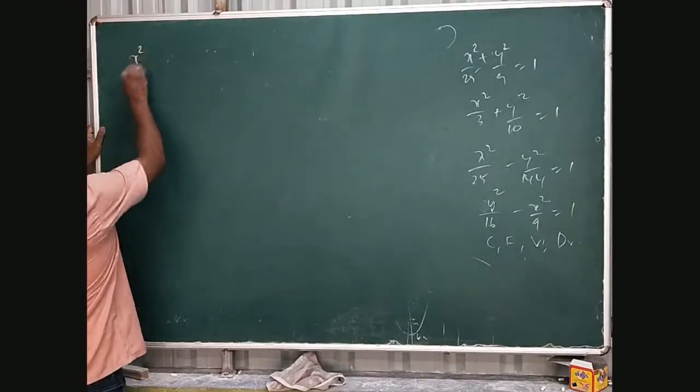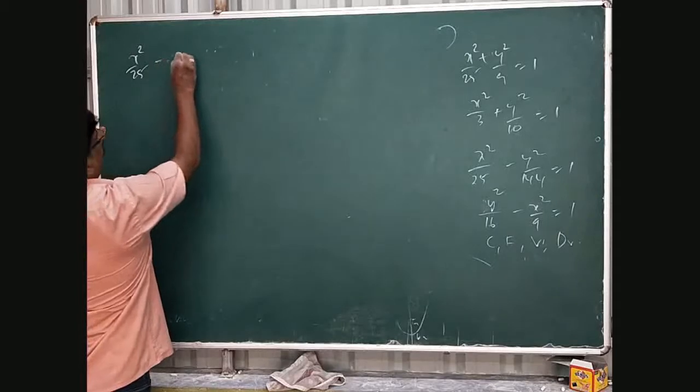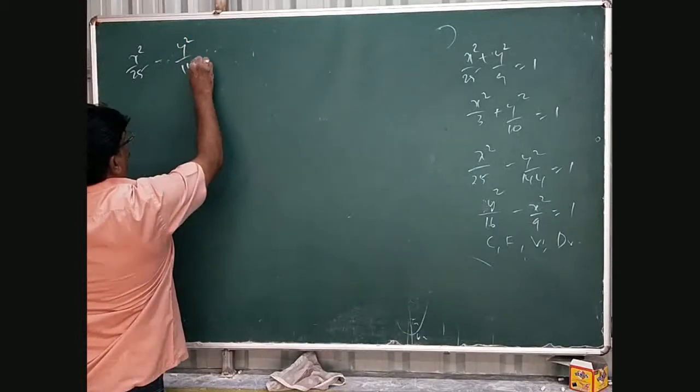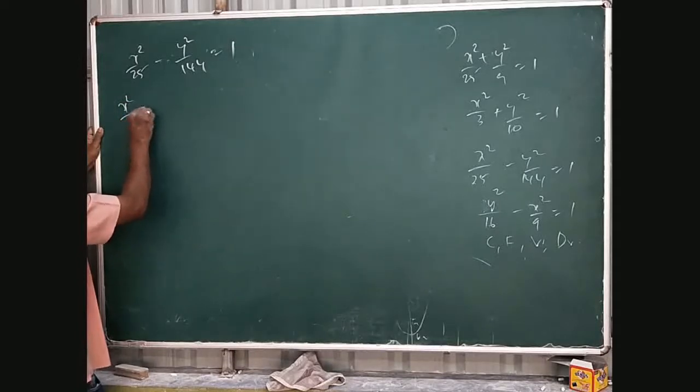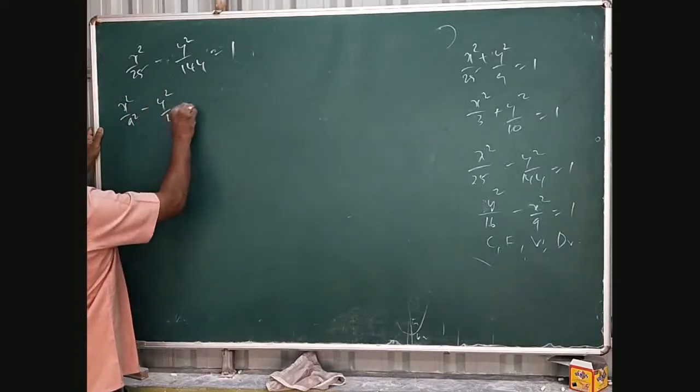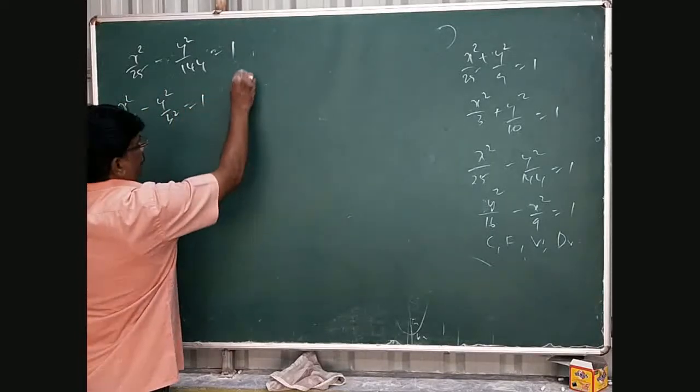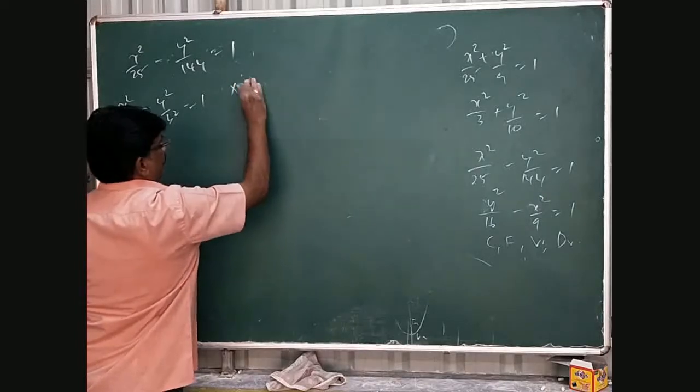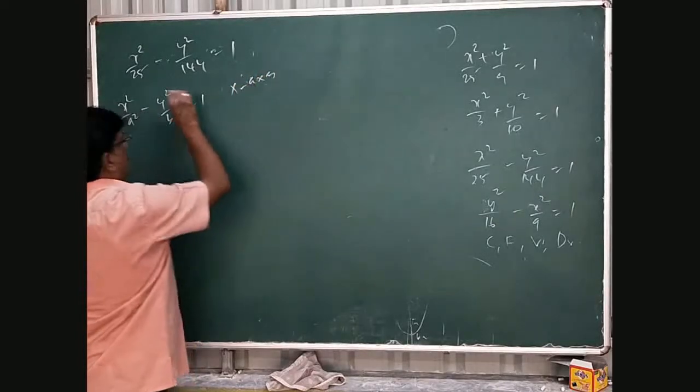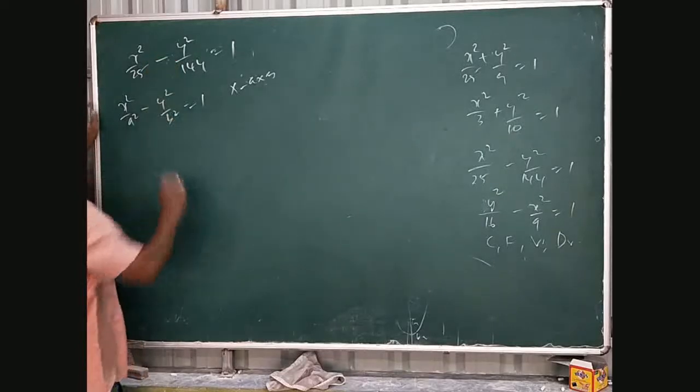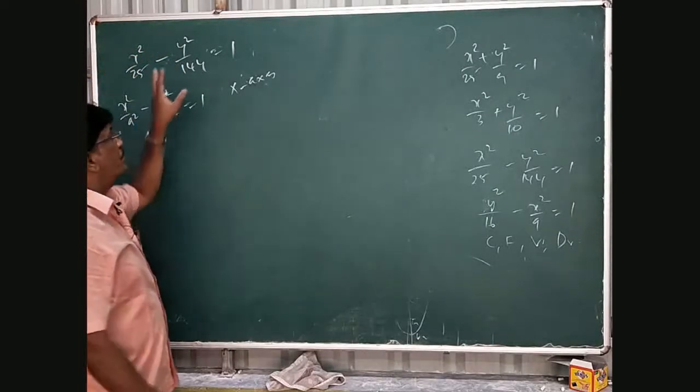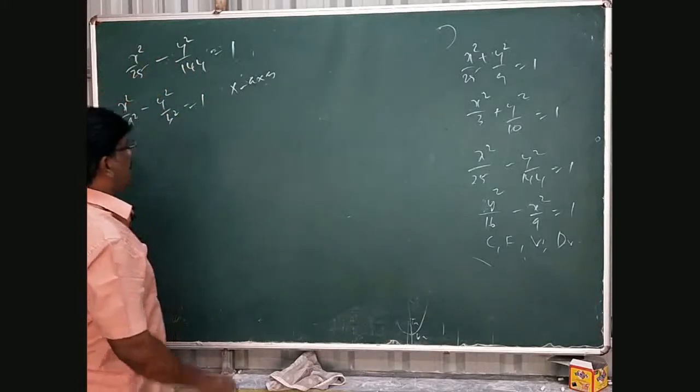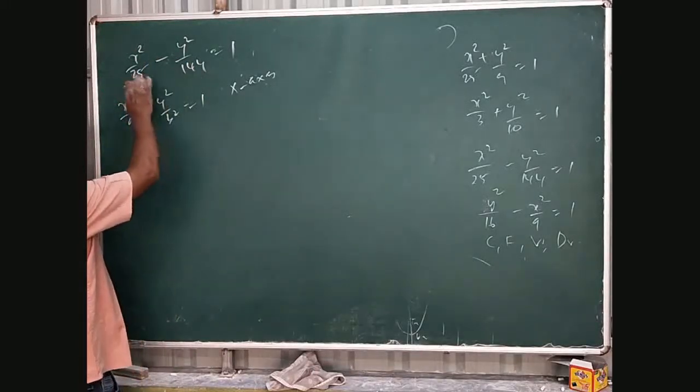Given x squared by 25 minus y squared by 144 equal to 1. So, general hyperbola formula x squared by a squared minus y squared by b squared equal to 1. This is parallel to x axis because here the x squared term is positive. This is positive, this negative, this is a greater.